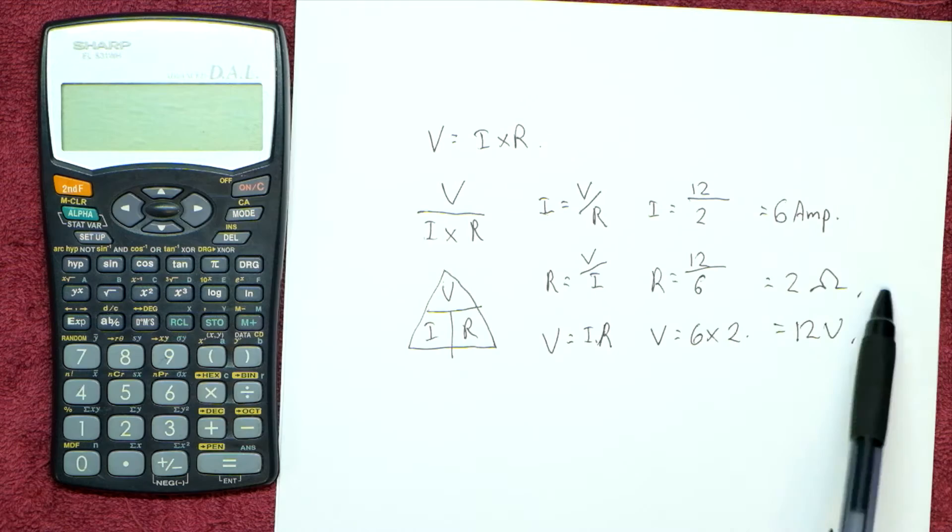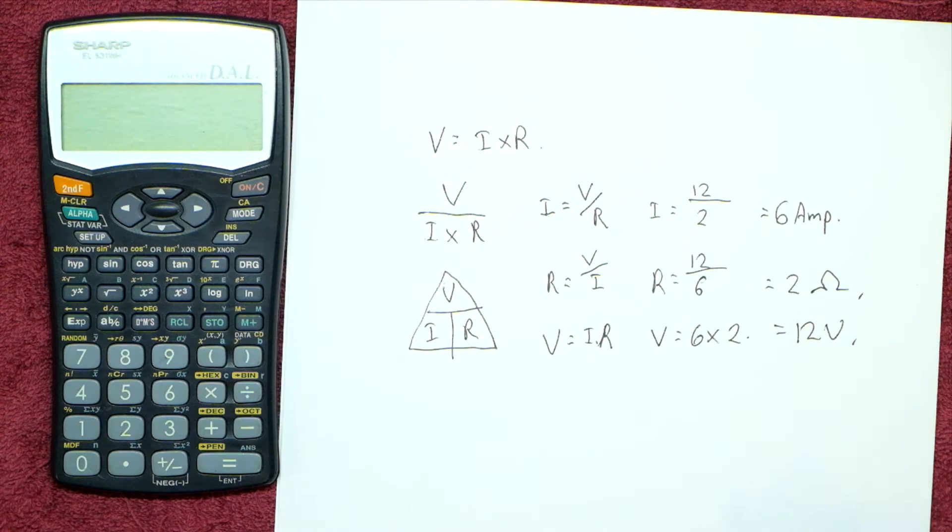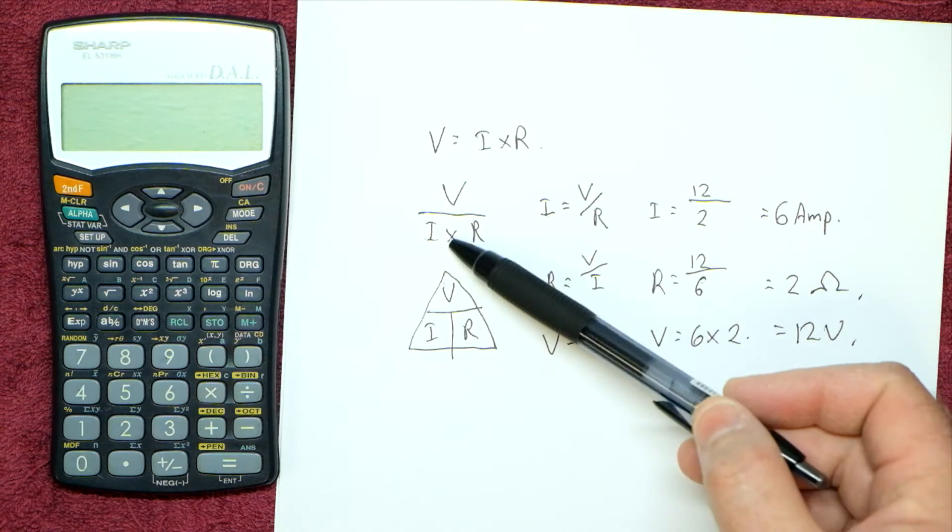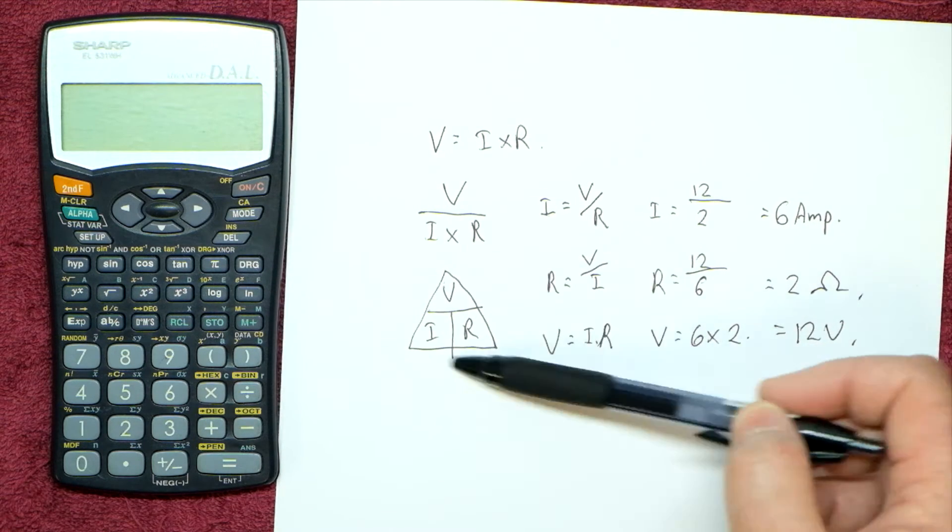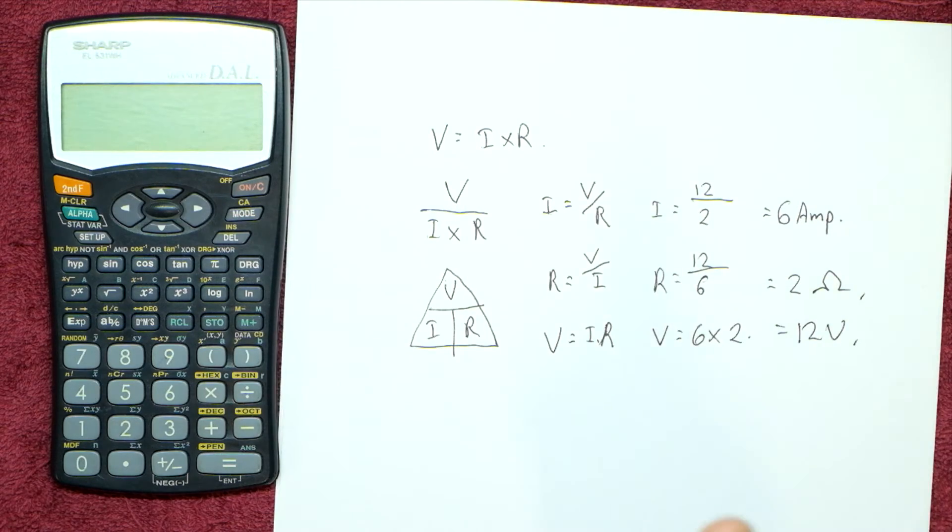It can get a little bit more complicated with lesser known values or higher values or whatever the case may be, but that is the pure basics of the Ohm's Law formula. So I recommend you guys take a note of V over IR. This little triangle over here is pretty much the Ohm's Law.